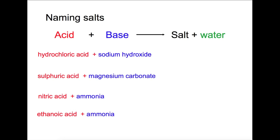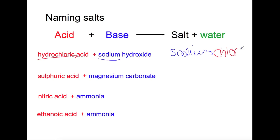The first example is hydrochloric acid and sodium hydroxide. The start of the salt's name comes from the base, so it will be sodium. The second half of the name comes from the acid, and hydrochloric turns into chloride, so our salt will be sodium chloride.